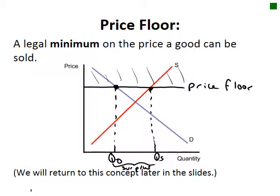A price floor is a legal minimum at which a price can be sold. For a price floor to be binding, it would need to be above the equilibrium. With a price floor, we can charge more but we can't go below the floor, so we cannot get to the equilibrium. We look at where it intersects supply — that's QS — and where it intersects demand — that's QD. We have more supplied than demanded, so we have a surplus. We'll talk about this further later in the presentation.